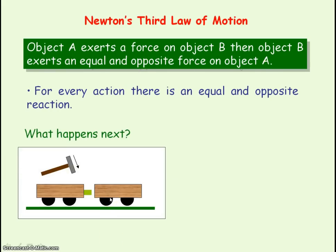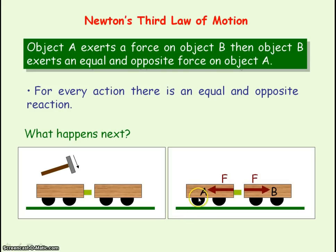Here you have two trolleys that are stationary, and one trolley has a plunger which you can release by hitting the trolley. When the plunger is released, trolley A exerts a forward force on trolley B, and from Newton's Third Law, trolley B exerts a backward force on trolley A. So the trolleys move in opposite directions. If the trolleys have the same mass, they will have the same accelerations and will cover the same distance.